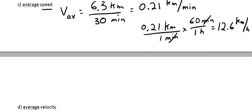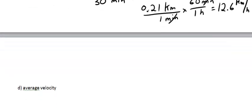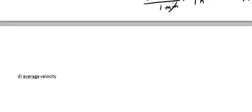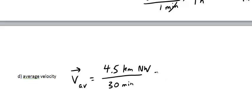The last thing to do is look at average velocity. Our average velocity is the displacement over time. And we've established that the displacement was 4.5 kilometers northwest. The time is still 30 minutes.